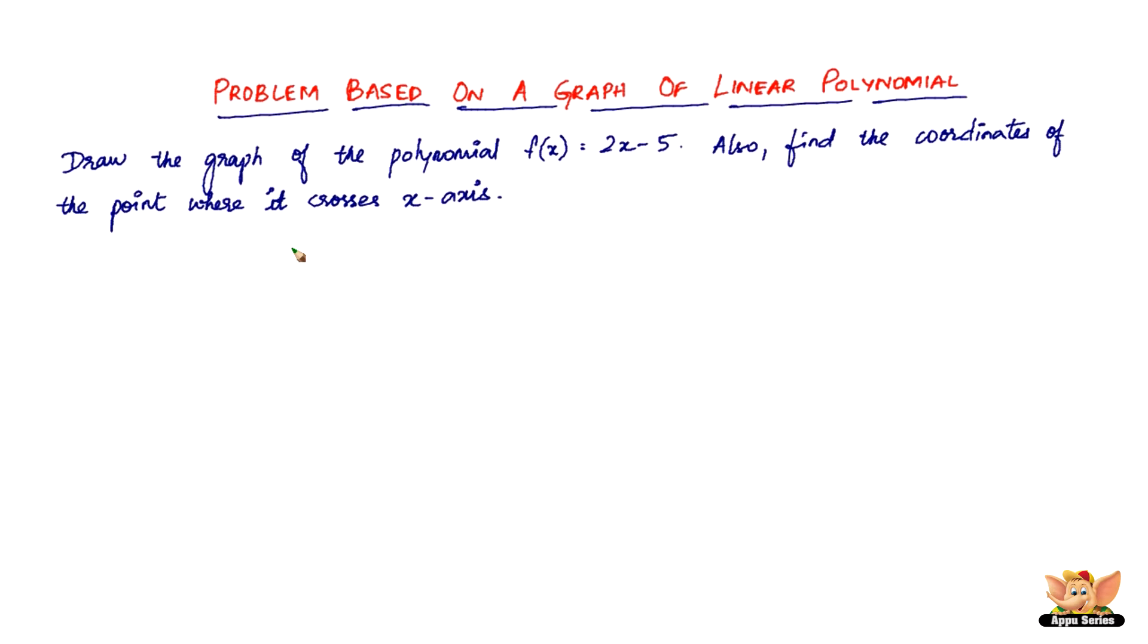In this video, let us solve a problem based on a graph of linear polynomial. We've got a problem here which says draw the graph of the polynomial f(x) = 2x - 5. Also find the coordinates of the point where it crosses the x-axis.